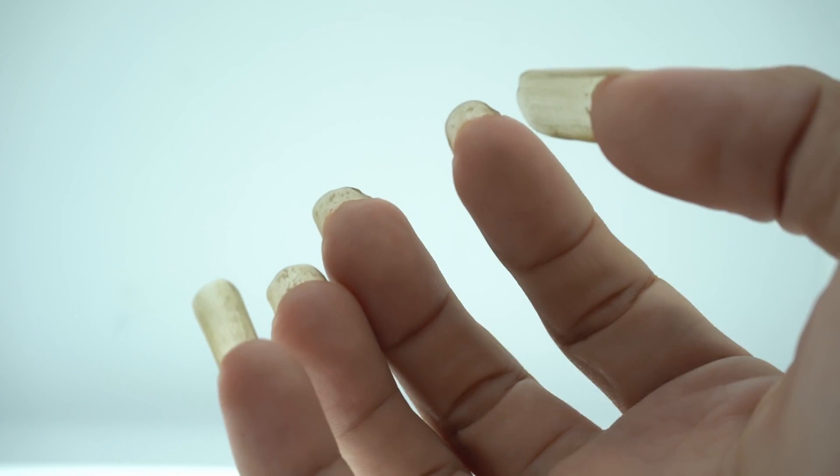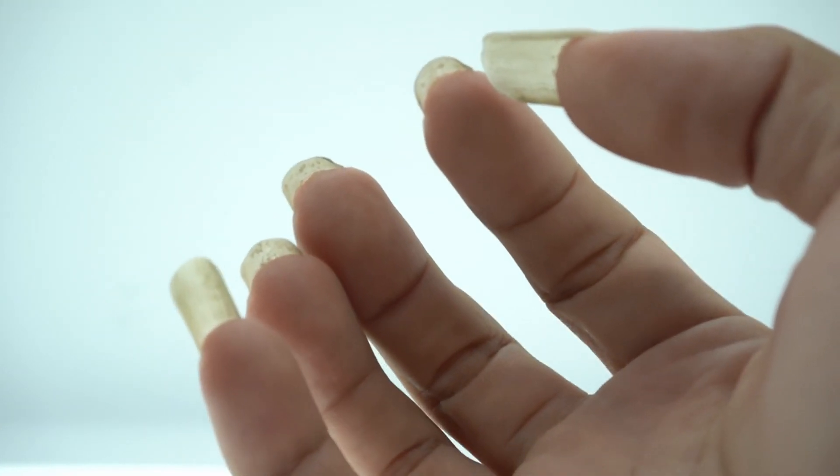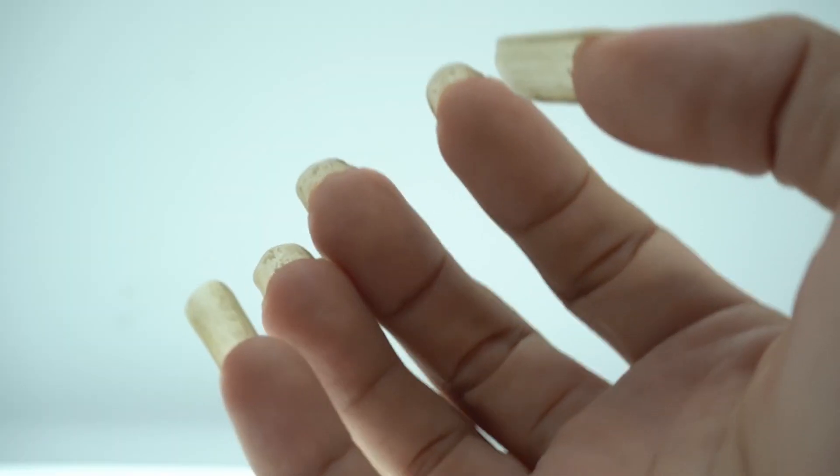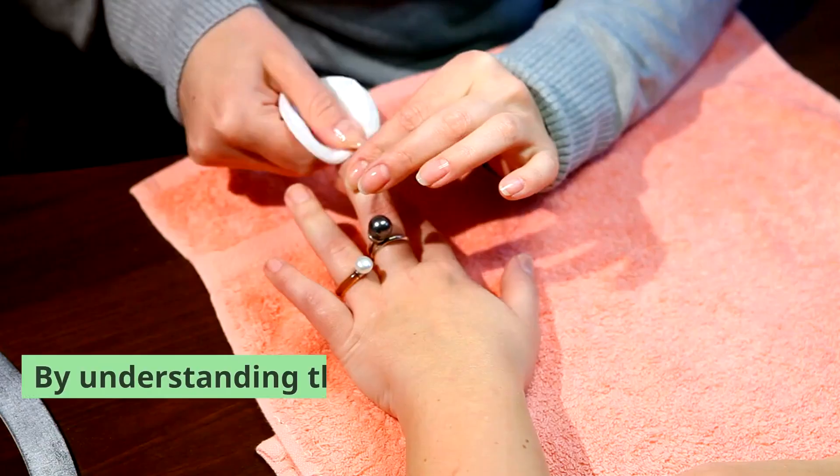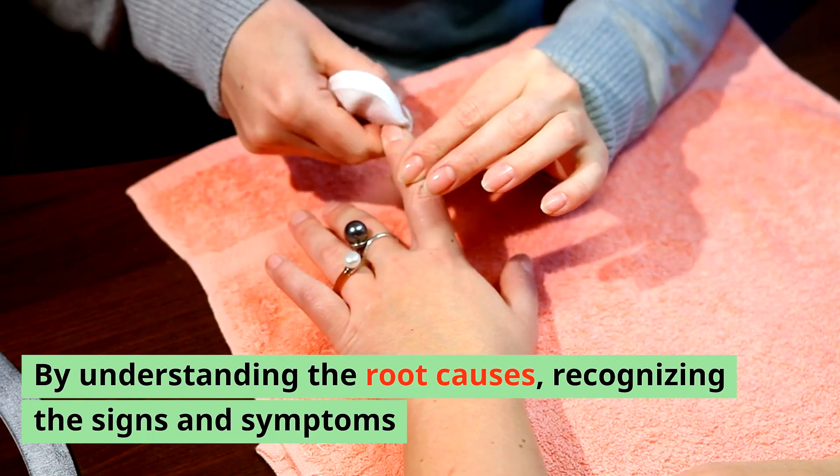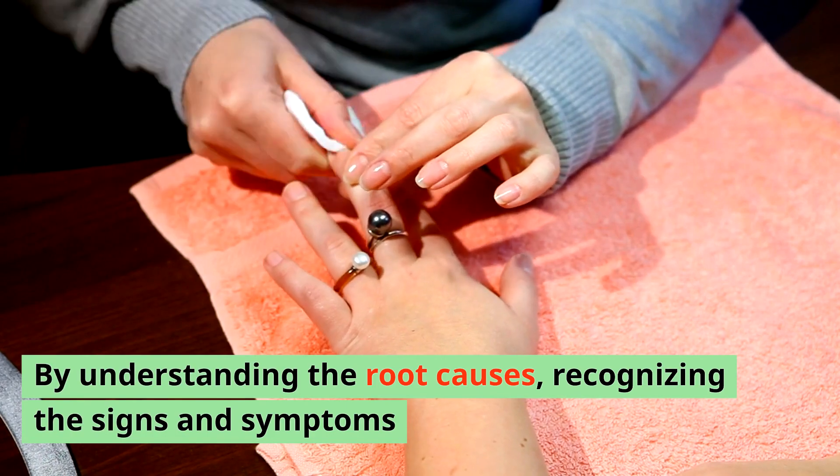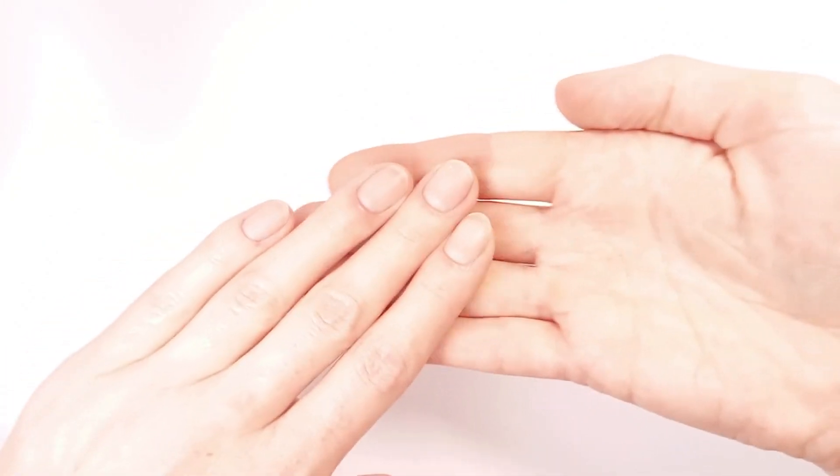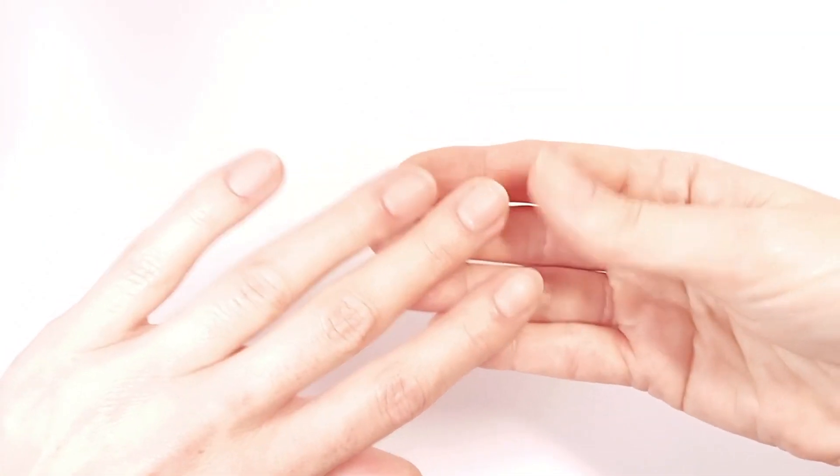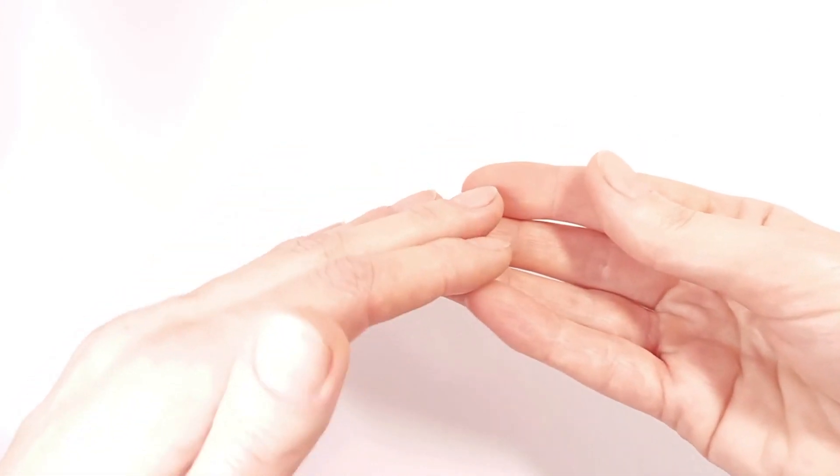Vertical ridges on nails serve as valuable indicators of our internal health, offering insights into potential deficiencies, imbalances, or underlying conditions. By understanding the root causes, recognizing the signs and symptoms, and adopting holistic approaches to nail health, we can nurture strong, resilient nails that reflect overall well-being. With proper care, attention, and professional guidance, we can address nail ridges effectively and embark on a journey towards healthier, happier nails and bodies.